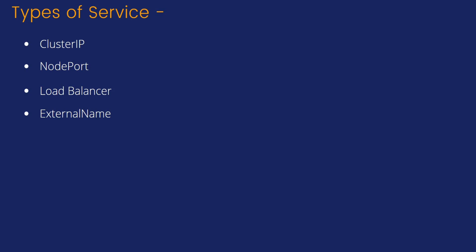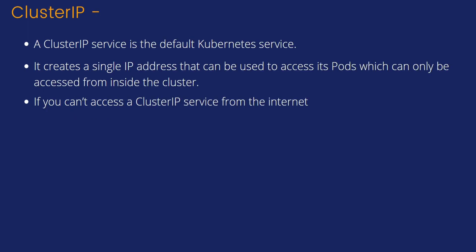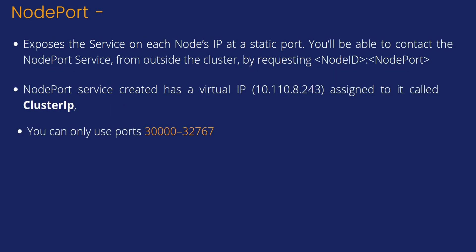There are mainly three types of services: ClusterIP, NodePort, and LoadBalancer, plus one more called ExternalName. When you create a service as ClusterIP, the group of pods cannot be accessed from the outside world — you can communicate inside the cluster only. This is also the default service type if you don't define any type.